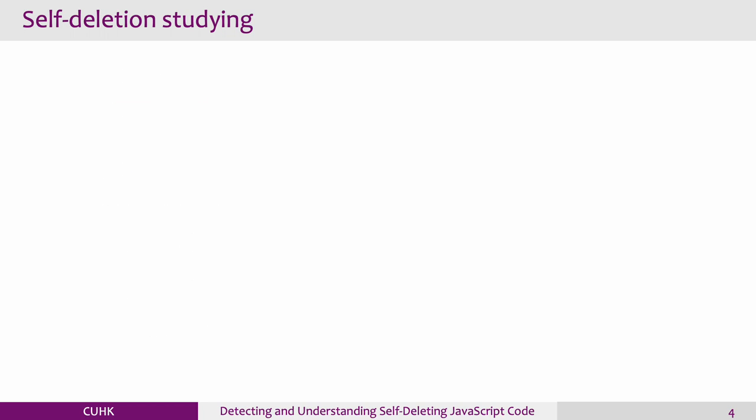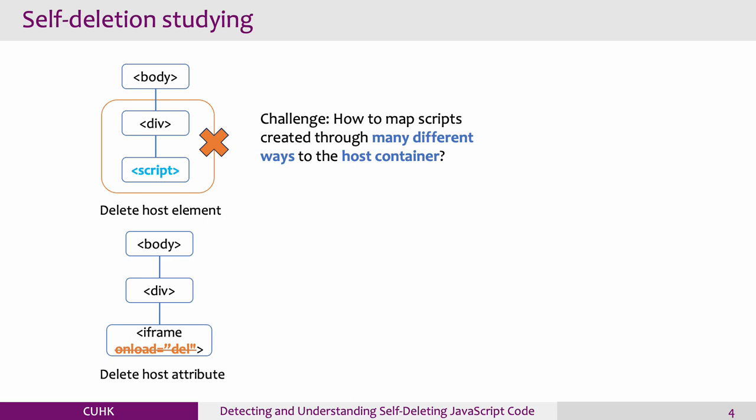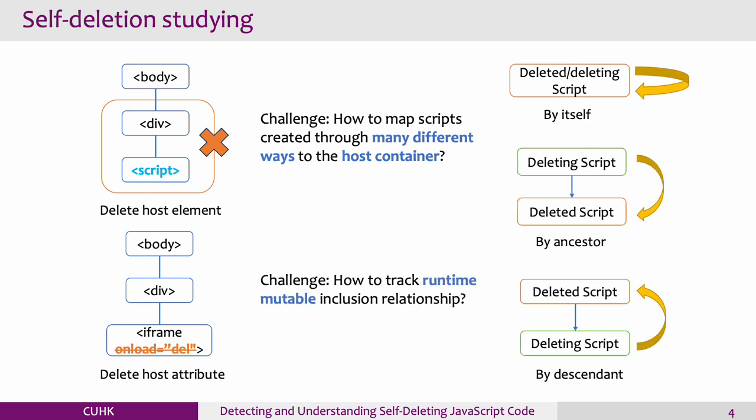However, it is challenging to map scripts created through many different ways to the host container. Depending on the relationship of the two scripts, we can also categorize self-deletions into three classes. However, it is challenging to track runtime multiple inclusion relationships.